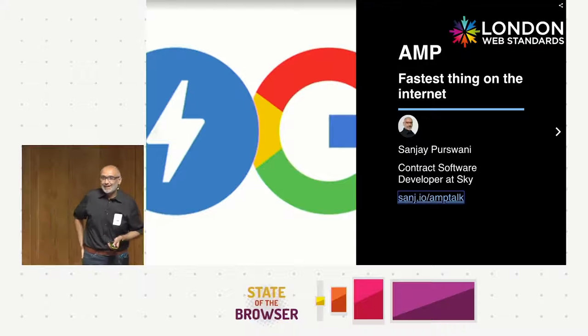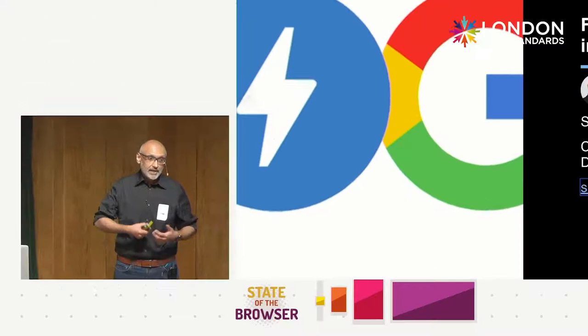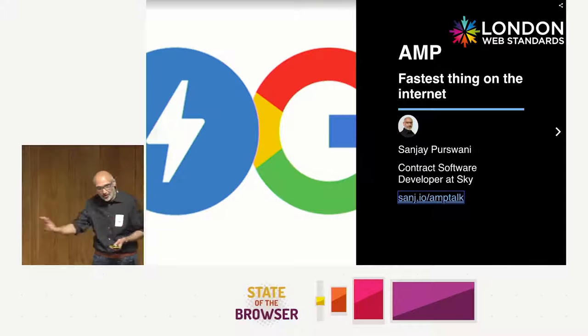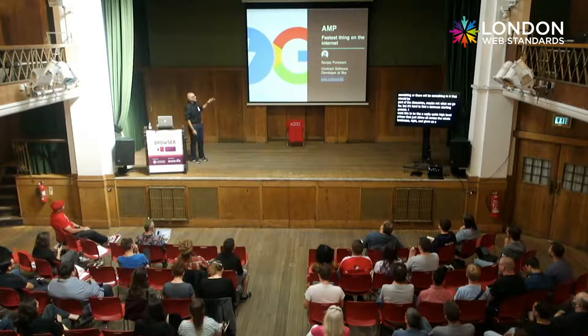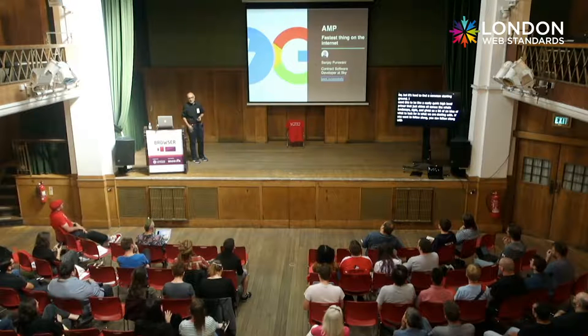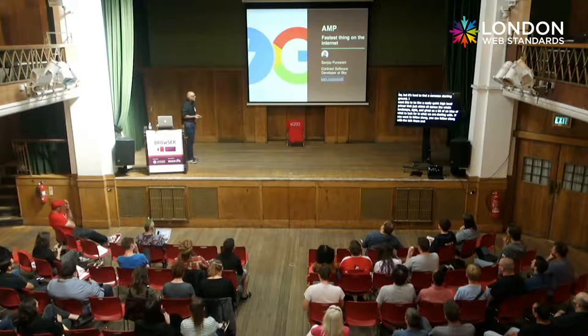What I've discovered working alongside people who don't really know much about AMP is that I find a lot of situations in business where AMP could solve something, or there'll be something in AMP that should be part of the discussion - maybe it shouldn't be what we go for, but it's hard to find a common starting ground. That's why I want this to be a really quick high-level primer that skims across the whole landscape. If you want to follow along, you can visit sans.io/amp-talk - you don't have to take notes, just visit it later.